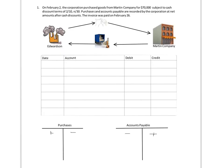The first transaction on February 2nd: the corporation purchases goods from Martin Company for $70,000, subject to cash discount terms of 2/10 net 30, recorded at net amounts after cash discounts. We pay the invoice on February 26th. Before we record any transaction, it's important we understand the essence of what happened — we're Edwardson Corporation, we purchased inventory from Martin Corporation and gave our promise to pay in the future.